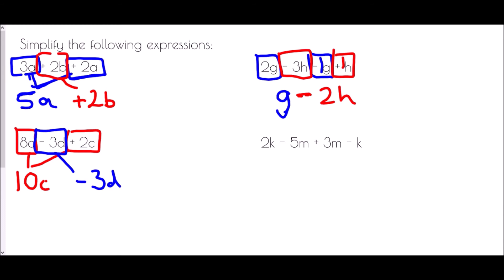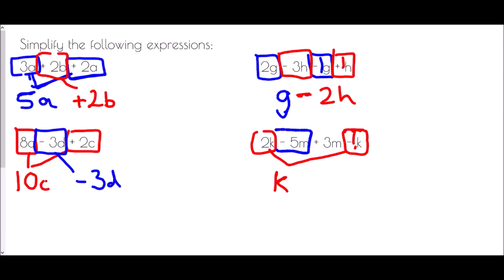In 2K take away K - remember that's like having 1K - so 2K take away 1K leaves 1K. For the M's: negative 5M and adding 3M. If I start at negative 5 and add on 3, I'm still negative - I'd be at negative 2M.